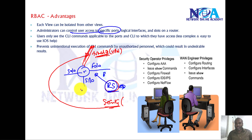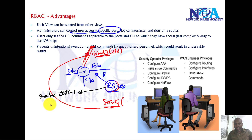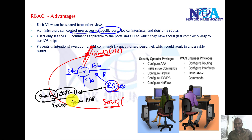We can also control specific commands flexibly — for example, allowing the routing switching engineer to use all 'router' commands except 'router BGP'. We can exclude specific commands like BGP while allowing everything else. It's a flexible way to manage commands for specific users.